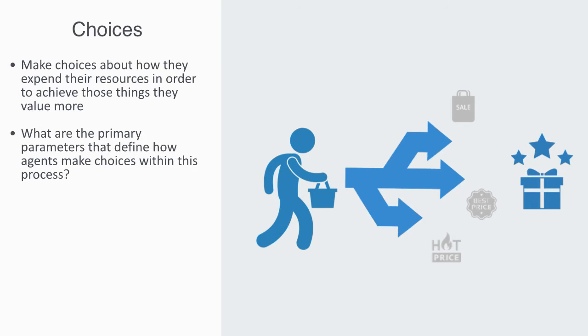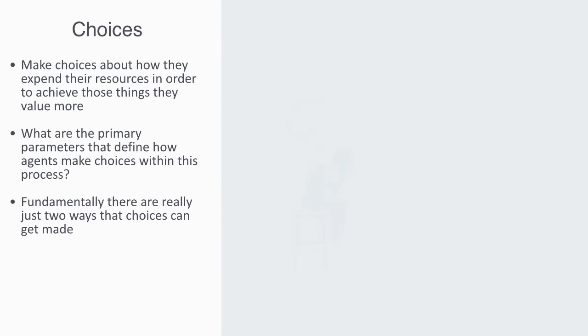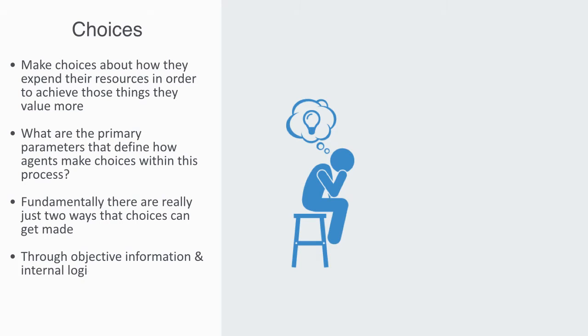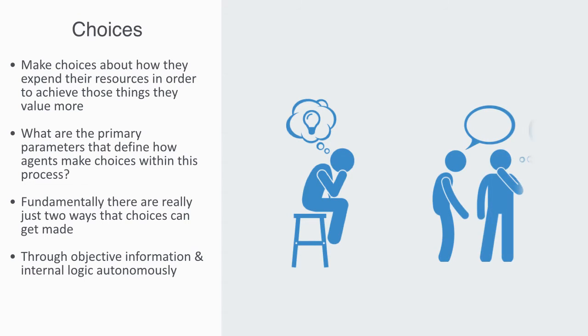On a fundamental level, there are really just two ways that choices can get made. Firstly, the agents have information and some internal logic that is generating an independent decision, autonomous from any specific context. Or agents may draw upon reference to a social, cultural and environmental context in order to aid them in their decision making.